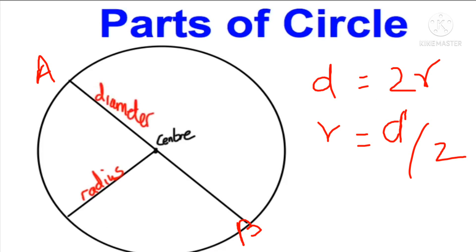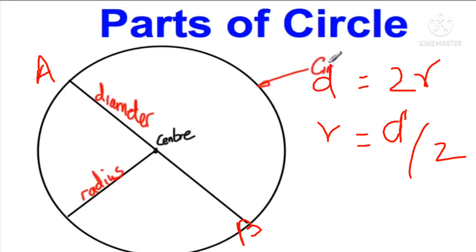A line passing through the center of the circle is called a diameter of the circle. AB is the diameter of this circle. Remember, the diameter of the circle is twice its radius — we can say d = 2r and r = d/2.